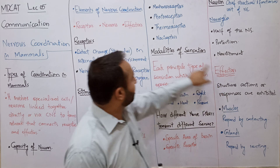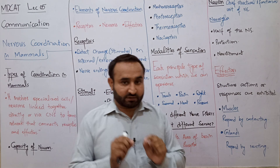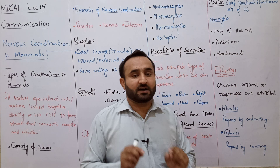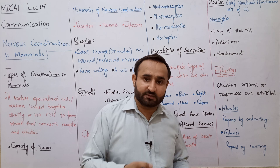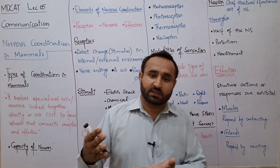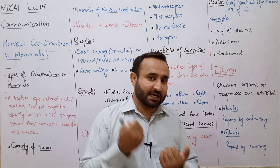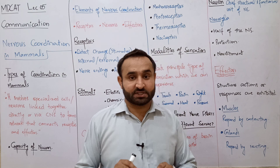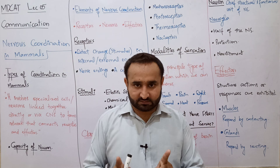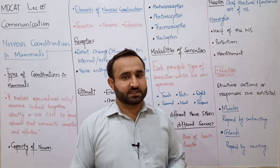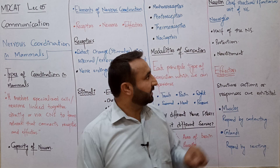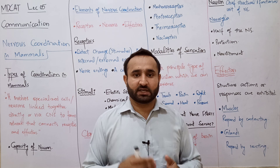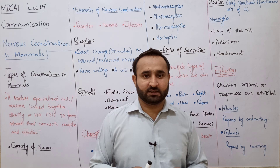Effectors: وہ structures یا organs جہاں پر response کا اظہار ہوتا ہے — the structures where actions or responses are exhibited۔ ہماری body میں صرف دو قسم کے effectors ہیں: muscles which respond by contracting، اور glands which respond by secreting۔ یہ اس پہلی lecture کا خلاصہ ہے۔ اگلی lecture میں neuron، اس کی types، اور nerve کے بارے میں بات ہوگی، اور پھر coordination سے related مزید lectures آئیں گے۔ آپ کا بہت شکریہ۔